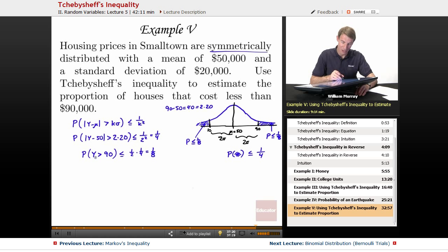And while that was the probability that a house was greater than 90, we want to estimate the proportions of houses that cost less than 90,000. So the probability that y is less than 90, well, we turn that around. And so it's greater than or equal to 1 minus 1 eighth. But of course, that's 7 eighths.